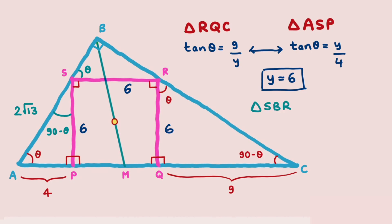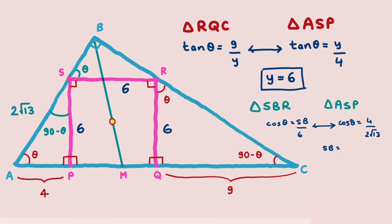Now we consider triangles SBR and ASP — both right angle triangles — and compare trigonometric ratios. In triangle SBR, cos theta = SB/6, and in triangle ASP, cos theta = 4/(2√13). Comparing these two equations, we get SB = 12/√13.